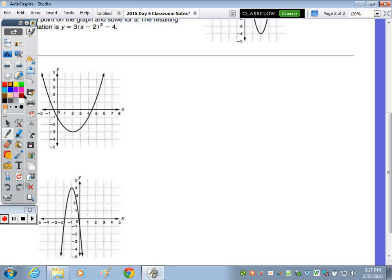Substitute the coordinates of a point on the graph and solve for a, and you have your resulting equation. So we need to use the vertex and a point on each of the curves to write its equation. I'm going to write the vertex form up here. So y equals a times x minus h squared plus k. So I'm going to note the vertex. Our vertex is 2, negative 3. So that means h is 2, k is negative 3.